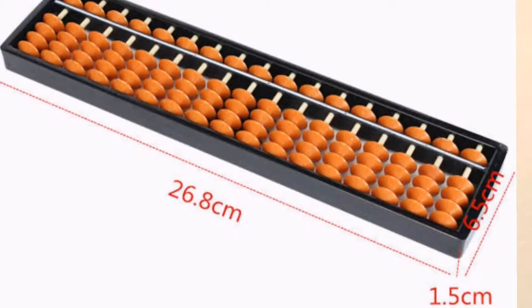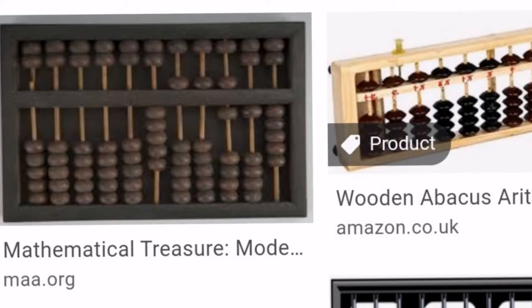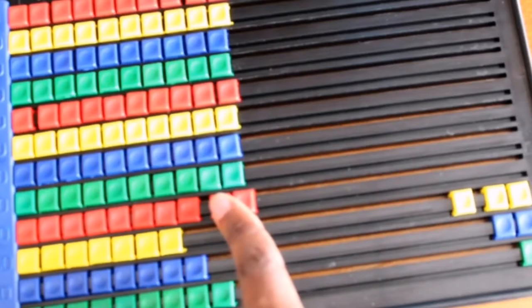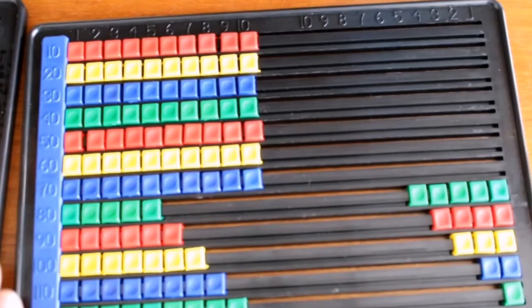The abacus is also known as the counting frame and it can be used for addition, subtraction, division, square roots, or even cubic roots. You can count from one up to like a billion and more using this tool.